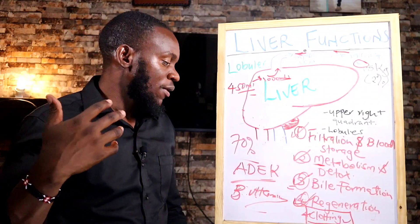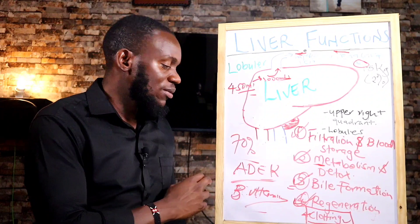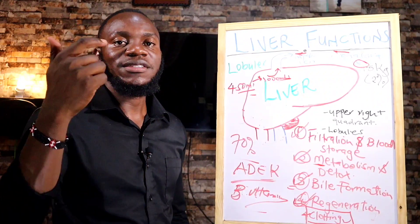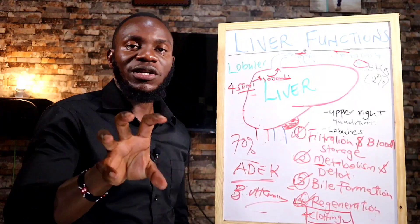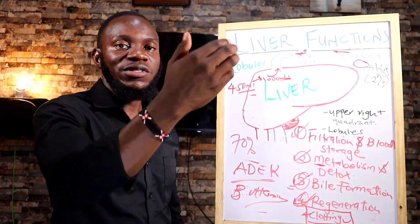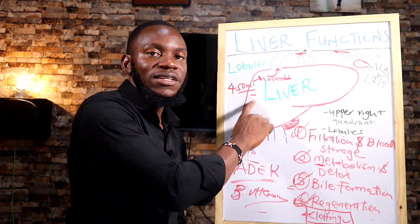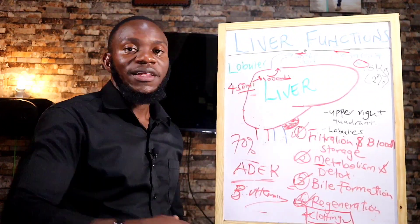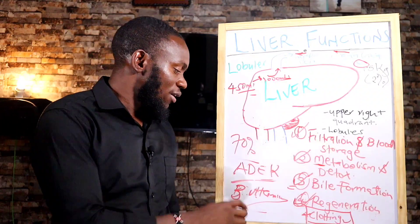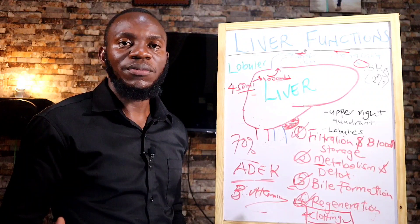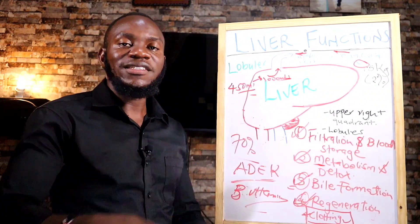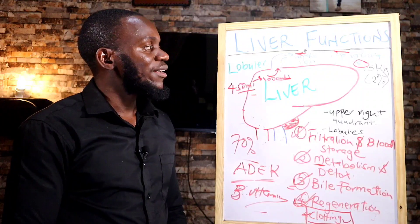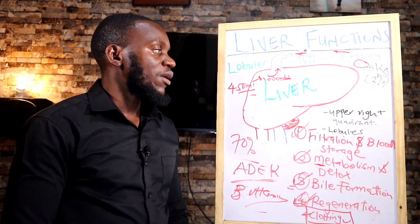You will bleed excessively from vitamin K and clotting deficiency. You will also have problems with metabolism and excretion of toxins, and problems with your bones due to vitamin D. Excess vitamin A in the liver can cause liver inflammation, so the liver clears it out to protect itself. Basically, that is the function of the liver and what will happen if you don't protect your liver.